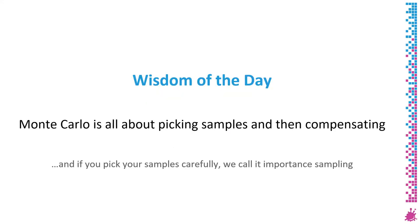This brings us to our final wisdom of the day: Monte Carlo integration is all about picking samples and then compensating for it. The way you pick those samples is up to you, but if you cherish your samples, you will do it in a smart way — and we call this importance sampling. You already heard a bit about importance sampling before, but we will be seeing quite a bit more of it soon.